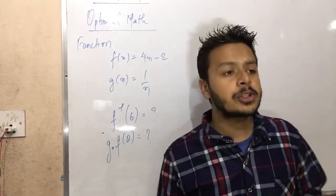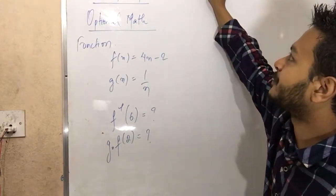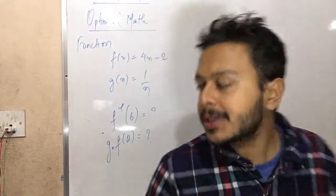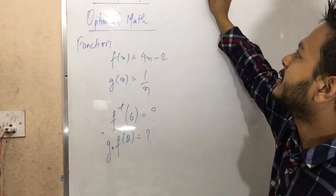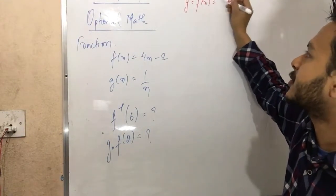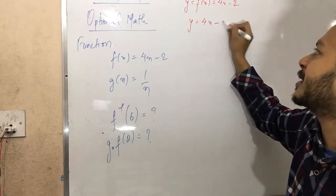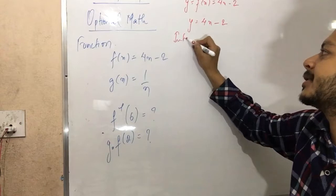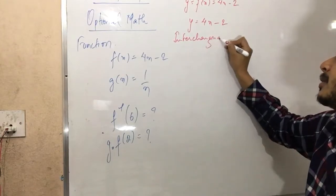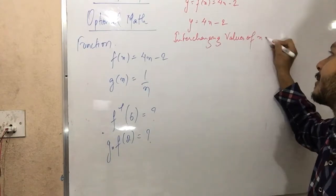The first question will be how to find f inverse of x. The first step: let y = f(x) = 4x - 2, so y = 4x - 2. Now I am going to interchange the values of x and y.